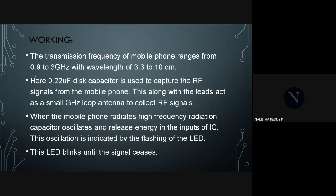Working. Generally, the transmission frequency of mobile phones ranges from 0.9 to 3 GHz with a wavelength of 3.3 to 10 cm. CA3130 functions as a current-to-voltage converter with a 0.22 Micro Farad capacitor connected between the inverting and non-inverting channels.